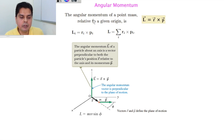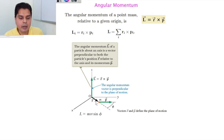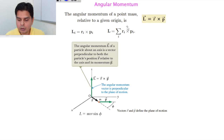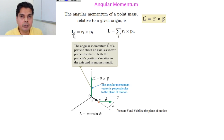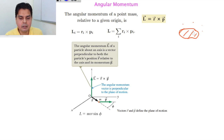For a particle of mass m moving with linear momentum p at position r, the angular momentum is defined with respect to a given origin. Always ask: with respect to which origin? For the ith particle, Lᵢ = rᵢ × pᵢ. The total angular momentum of the whole body is found by summation over all discrete particles.